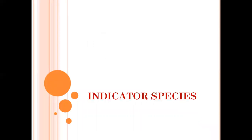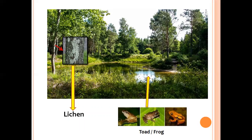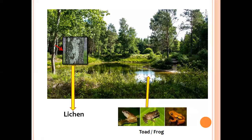Now let's look at indicator species. All plants and animals live, grow, reproduce, and multiply under certain environmental conditions. For example, different types of amphibians are found in a water body, and lichen species grow on tree trunks. However, if normal conditions are disturbed — due to air pollution, water pollution, or introduction of chemicals into the soil — the environmental conditions change, and some species will start to disappear.